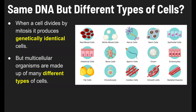But multicellular organisms are made up of many different types of cells. We're made up of red blood cells, white blood cells, nerve cells, sperm cells, bone cells — the list goes on. There are lots of different types of cells.